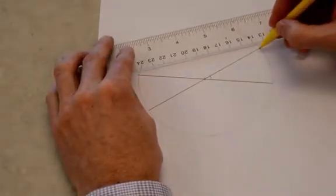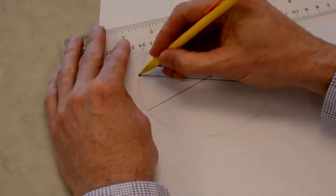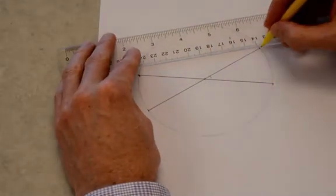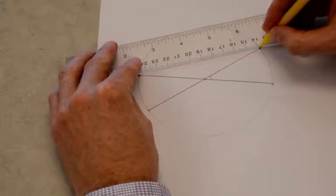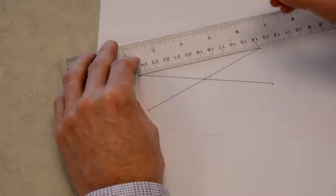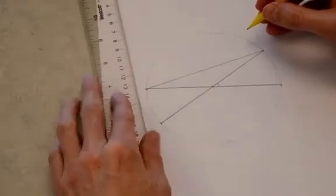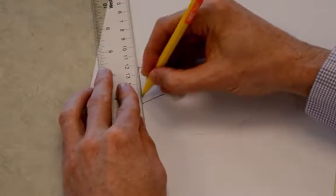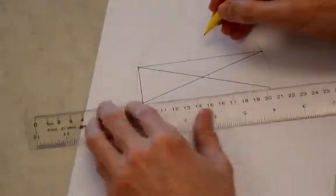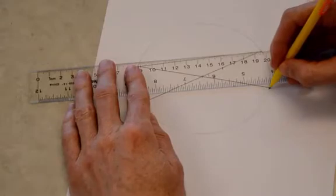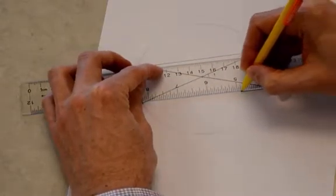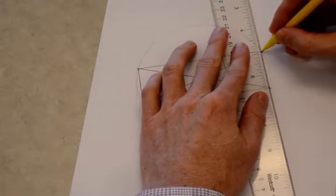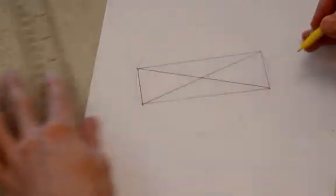Okay. So now to draw my rectangle, I'm just going to make these four points where you have the intersections with the circle. I want to make those the vertices, or the corners of the rectangle.